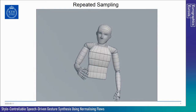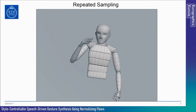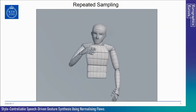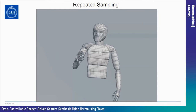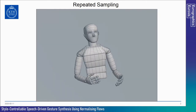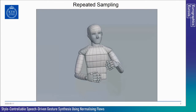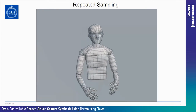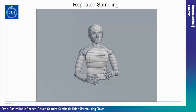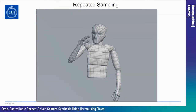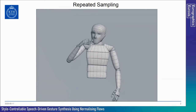For our base system without style control, we trained for 400 epochs, which took about 40 hours on a single GPU. We show how we can randomly sample different gestures using the same speech input — the system produces varied, natural-looking gesticulation for any given audio.